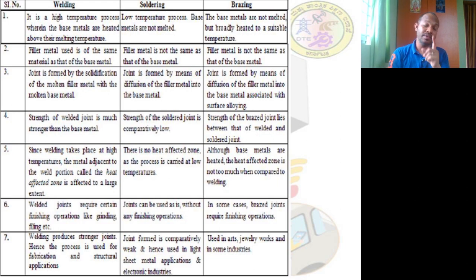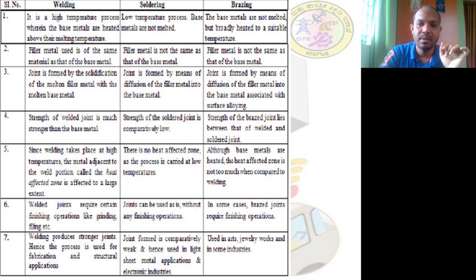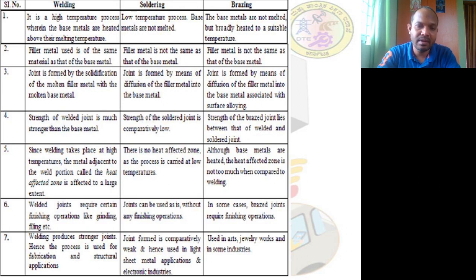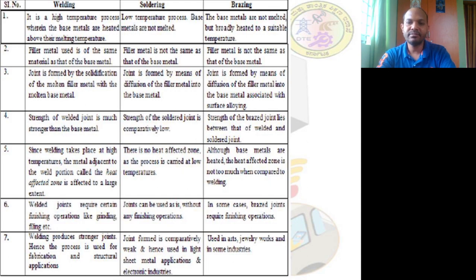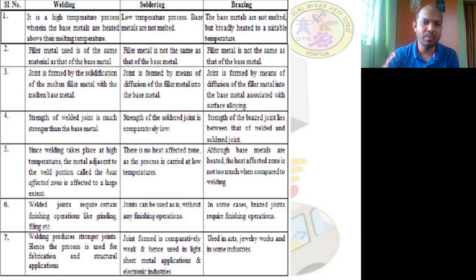Soldering is essentially a point or spot joining process — it is done only at certain points on a circuit board. It is weaker and so doesn't require finishing operations. Brazed joints may require finishing operations only when exposed on outer surfaces, but the amount of material accumulation in brazing is not as high, so filing may be sufficient.